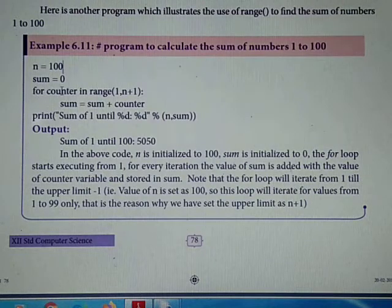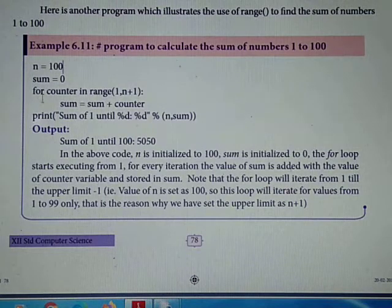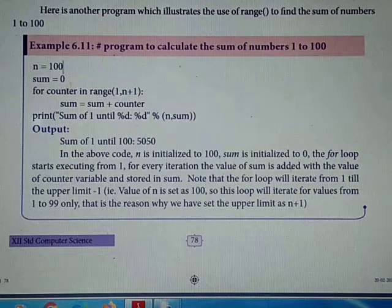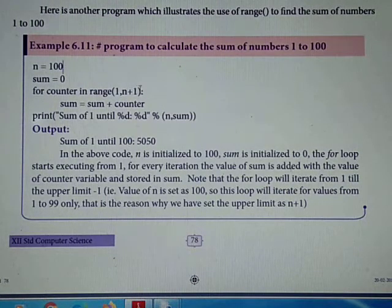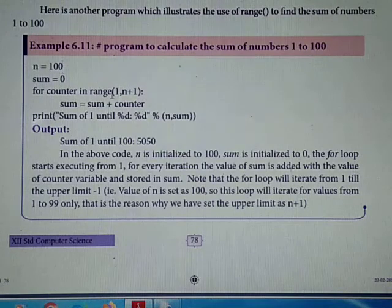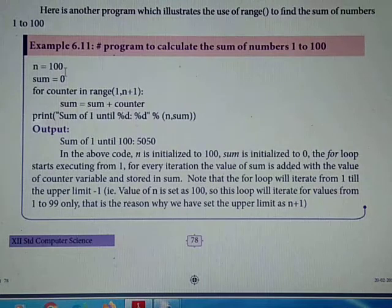We know that range stop value is the number before. Stop minus 1 - the last number will be neglected and not be added. That's the rule, n minus 1. That's why we have to give end value as n plus 1. To add 100, we give 101. Counter starts from 1, 2, 3, 4 and increases by 1. The range is repeated.